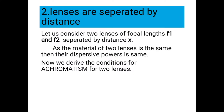The second case is lenses separated by a distance. We now explain the condition for an achromatic doublet when lenses are separated. Let us consider two lenses of focal lengths f1 and f2, separated by distance x. As the material of the two lenses is the same, their dispersive powers are equal. We need to find the equation for the focal length and the separation x.